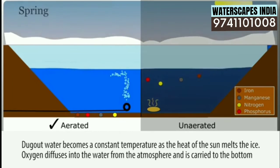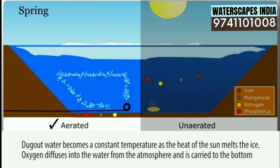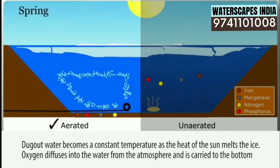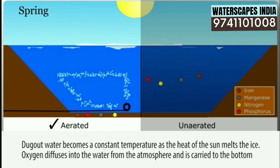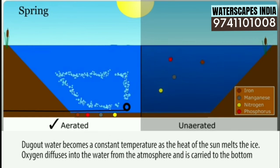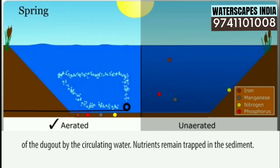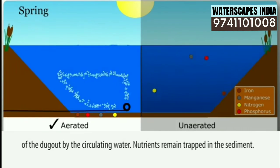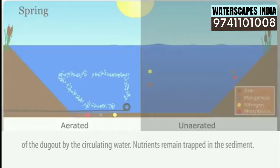Spring. Aerated: dugout water becomes a constant temperature as the heat of the sun melts the ice. Oxygen diffuses into the water from the atmosphere and is carried to the bottom of the dugout by the circulating water. Nutrients remain trapped in the sediment.